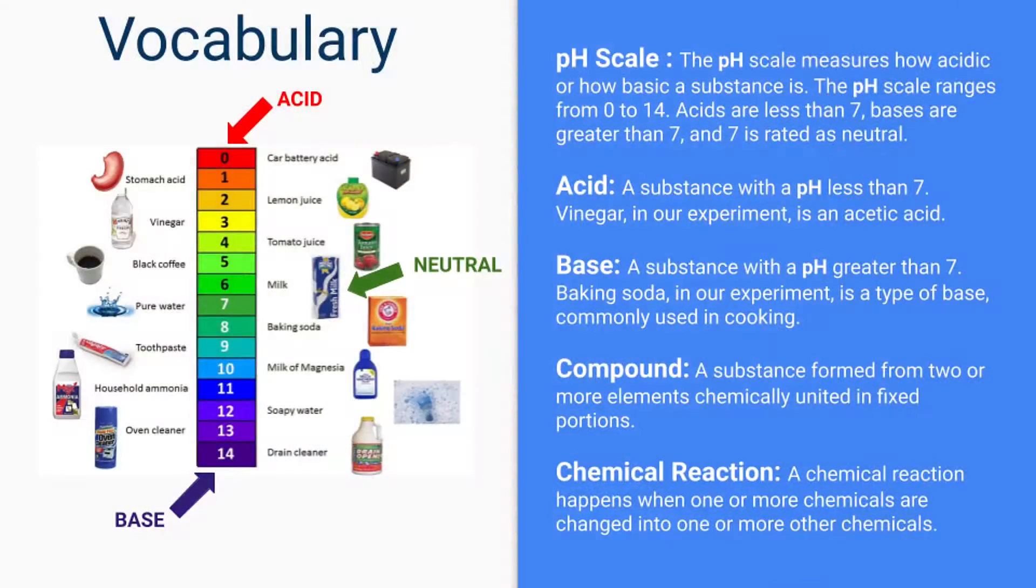So in order to understand all of that, we're going to start with some vocabulary words. The first thing we'll need to understand is the pH scale. If you look to your left, you'll see that rainbow rectangle on the screen. That's our pH scale.